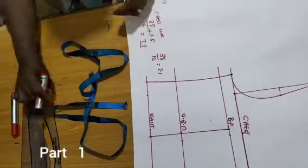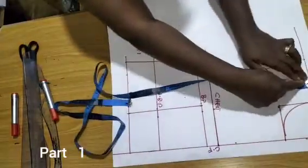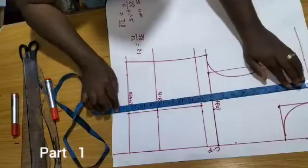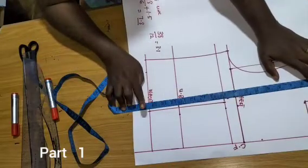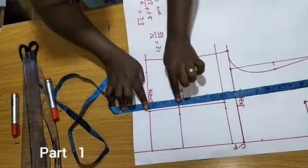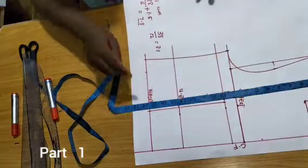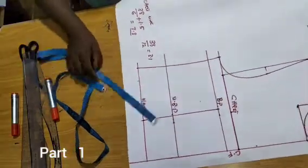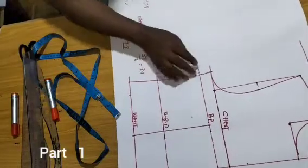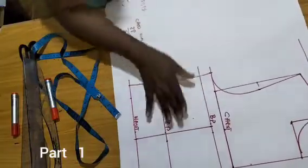To determine your back length: we have our front length which we achieved by adding three inches to the under bust. So the half length is now 17.5 — we have the under bust point and added three inches to achieve our half length. We'll go over to the back, and we need the back for our darts.